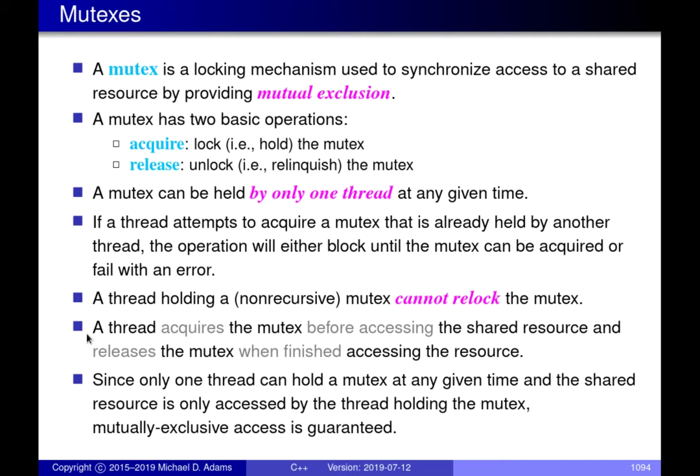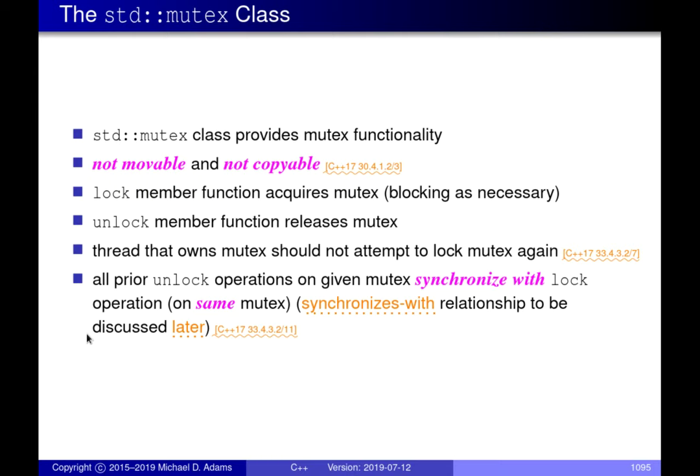By doing this, we can achieve mutual exclusion so only one thread at any given time can be accessing that shared resource, and we can avoid problems that come from two or multiple threads accessing the same shared resource at the same time — most typically a shared variable. In terms of C++, in the standard library, there's a class called std::mutex, which essentially provides mutex functionality.